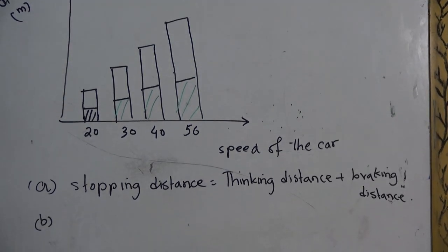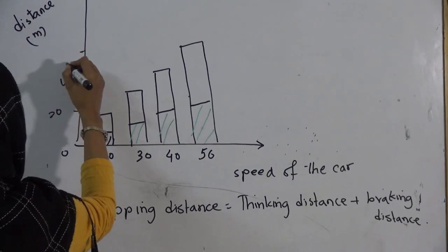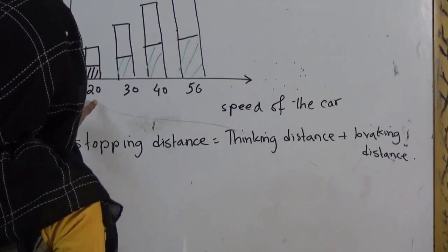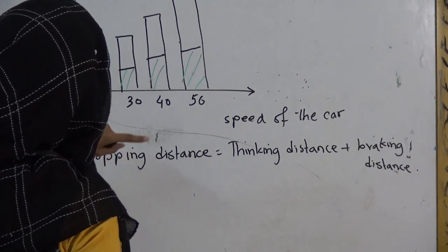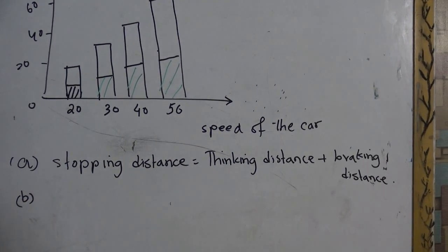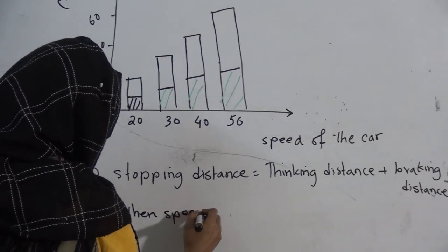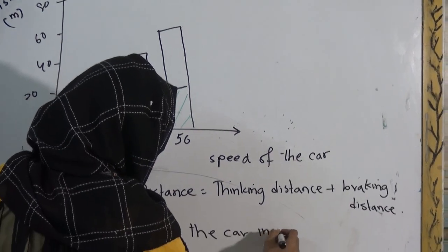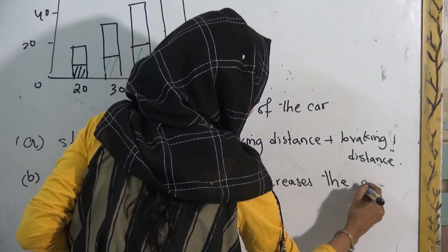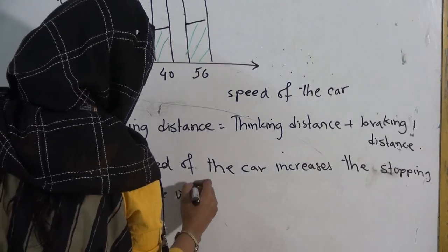Let's move to B. It says, describe the pattern shown in the graph. Now, if you see clearly at the graph, when the speed of the car was 20 meter per second or 20 miles per hour, whatever the unit it is given in, then when it is at 30, 40, 50, when the speed of the car increases, the distance will keep on increasing. From this graph, we can say that when speed of the car increases, the distance will also increase.